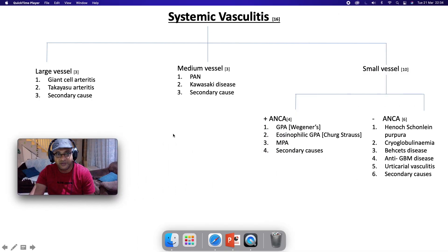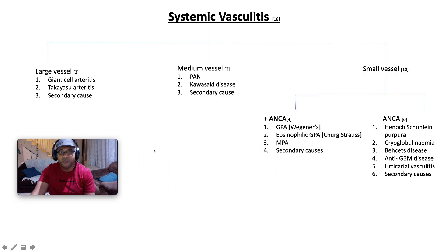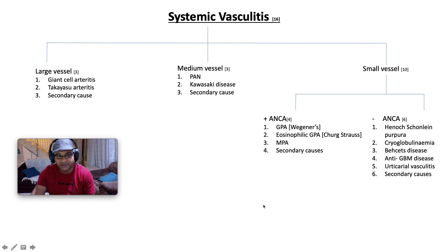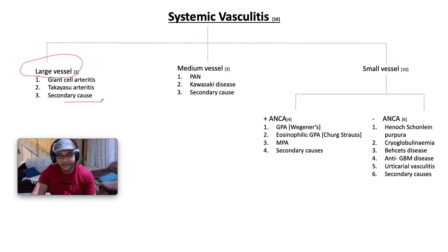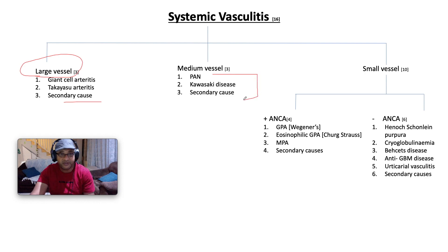When it comes to systemic vasculitis, we partition them based on the size of the vessel — three branch points: large vessel, medium vessel, and small vessel. Under large vessel there are three types: giant cell arthritis, Takayasu, and secondary causes. Under medium vessel there's polyarteritis nodosa, often associated with hepatitis B but can be standalone, Kawasaki disease, and secondary causes. Kawasaki mainly affects our pediatric population.